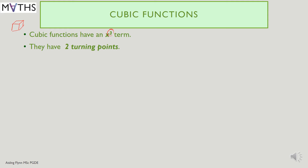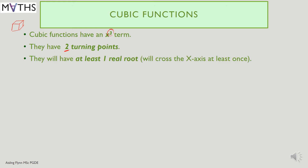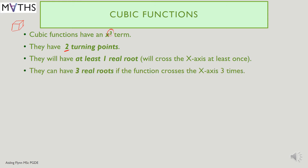Cubic functions, when plotted on an x-y graph, have two turning points. They will have at least one real root, so the graph will cross the x-axis at least once, and they can have three real roots if the function crosses the x-axis three times. We'll see pictures of those in a minute.